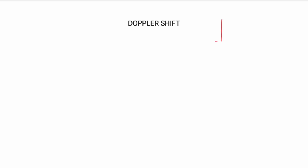First, let us see what is Doppler shift. Let us consider a general wireless system. In a wireless system, the transmitting antenna and the receiving antenna are separated by a very large distance. The transmitting antenna transmits the signal in all directions, and likewise the receiving antenna receives signals from all directions. There may be some difference among the signals received at the receiver.